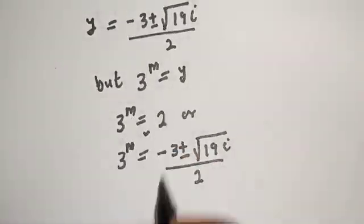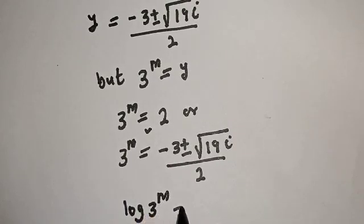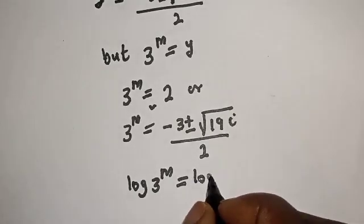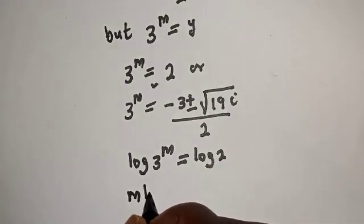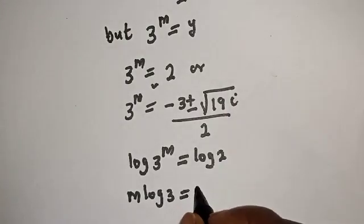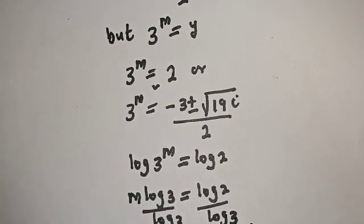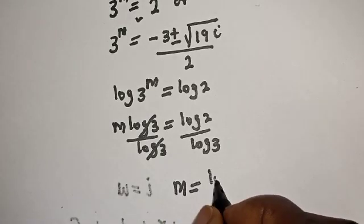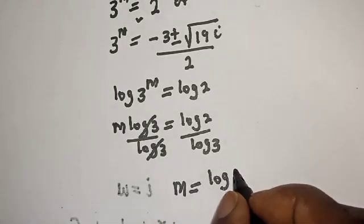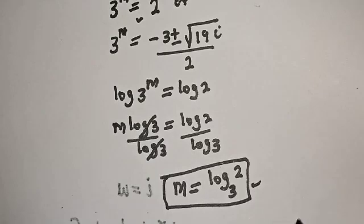From the first case where y equals 2, since y equals 3 raised to power m, we take the log of both sides. Log of 3 raised to power m equals log 2. Dividing both sides by log 3, we get m equals log 2 base 3. This is the first value of m.